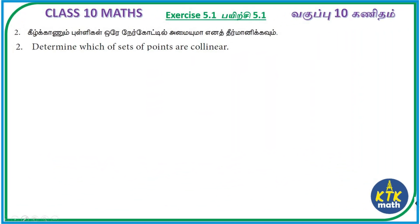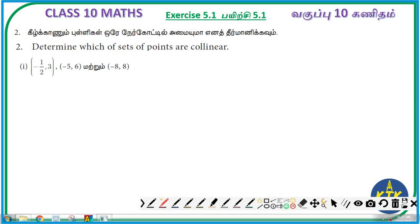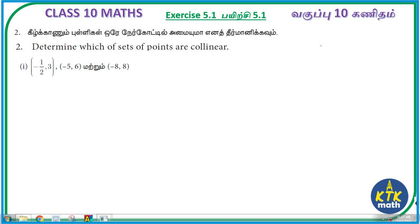Now question number 2: determine which of the sets of points are collinear. So if 3 points are collinear, they lie on the same line - that is what we need to prove. If three points form a triangle, definitely those three points can form a triangle. But if they are on the same line, the triangle area will be zero, so we use the area of triangle formula for this.